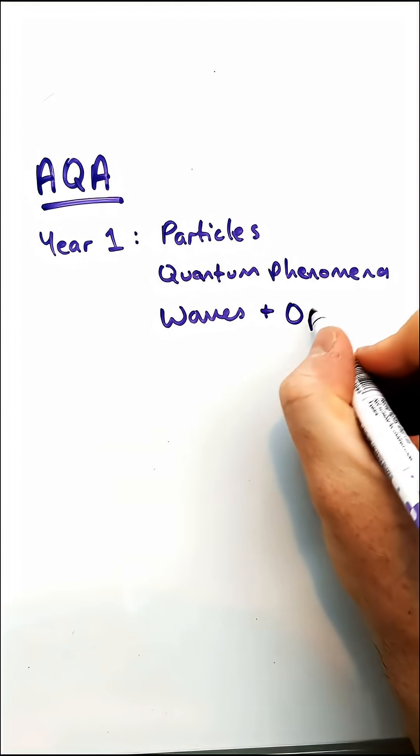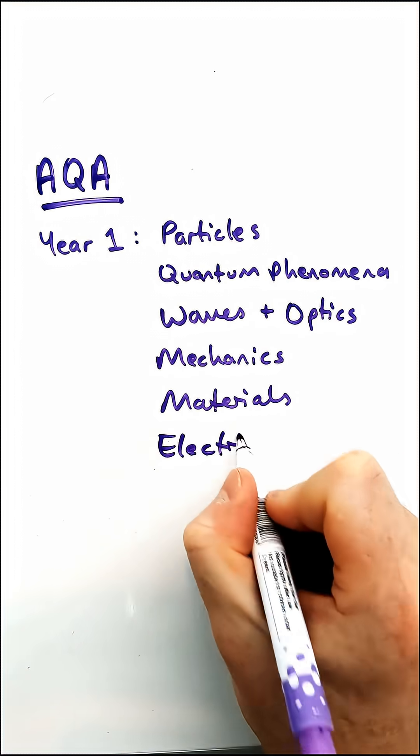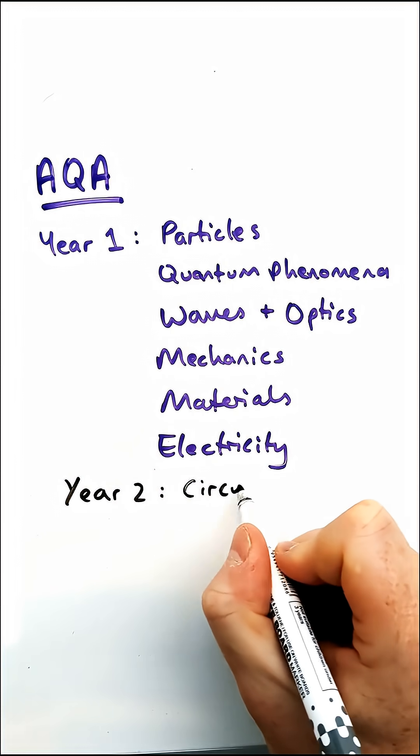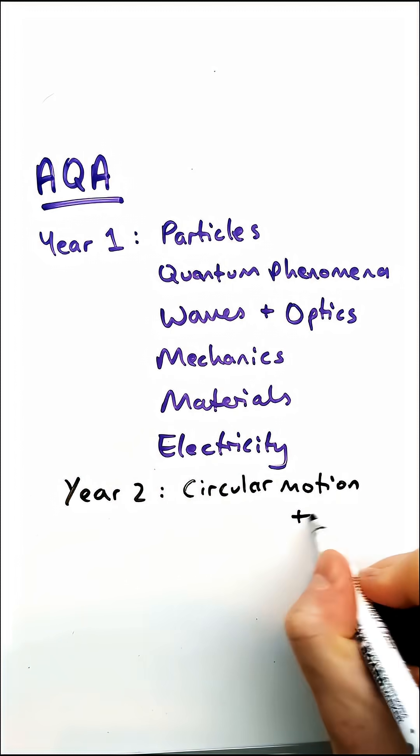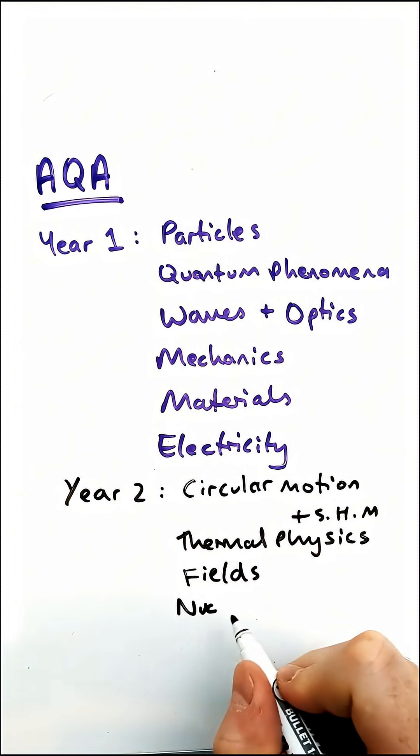along with quantum phenomena. You've also got waves and optics, mechanics, materials, and electricity. In year two you'll cover circular motion and simple harmonic motion, along with thermal physics and fields - magnetic fields, gravitational fields, electric fields - and also nuclear physics.